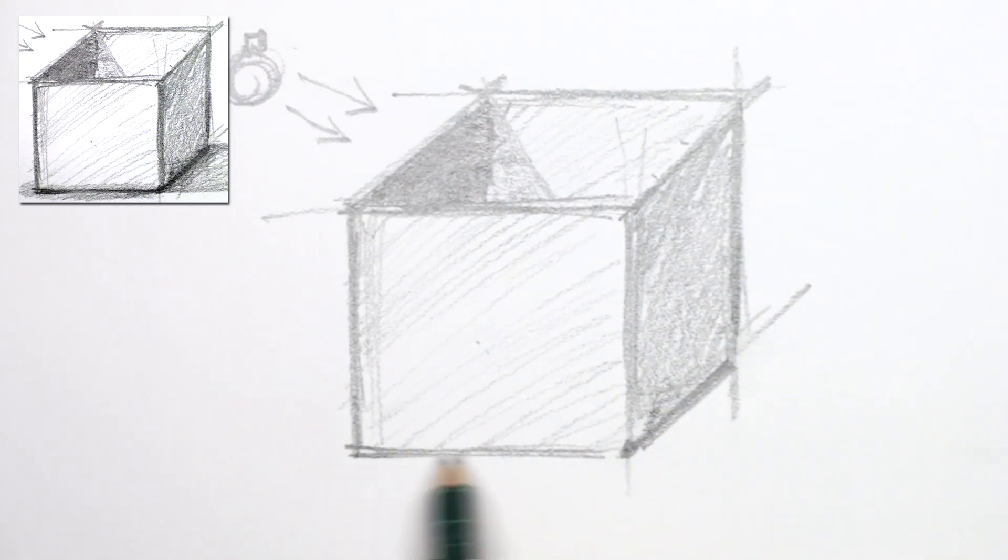What we want to do now in order to help place the box on the ground is talk about some other kinds of shading. And that is a little bit of shading right here along the bottom edge and on the ground.